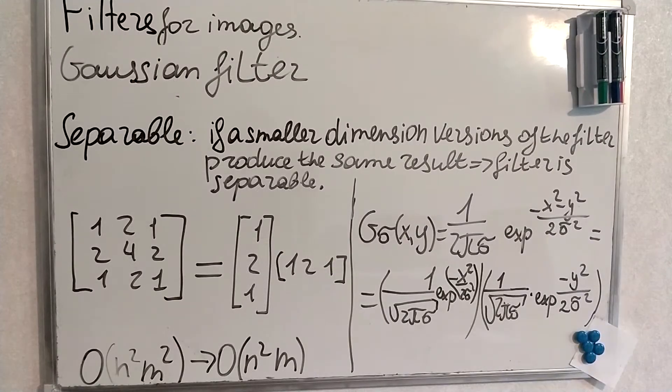Now we come to the concept of the separability. If a smaller dimension versions of the filter produce the same result, the filter is separable. So on the left you can see that 2D Gaussian kernel is separated into two 1D smaller versions of it.